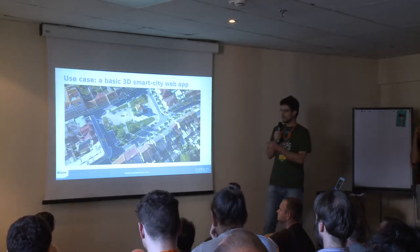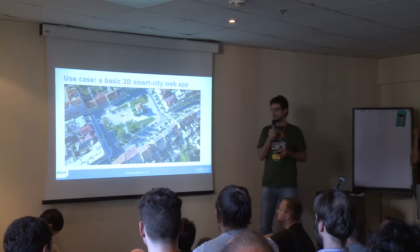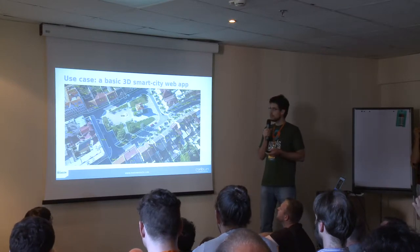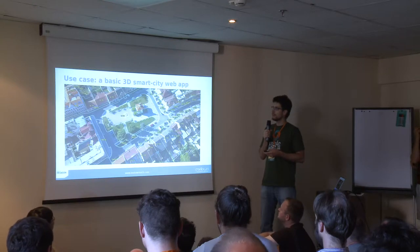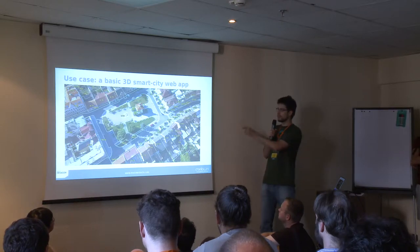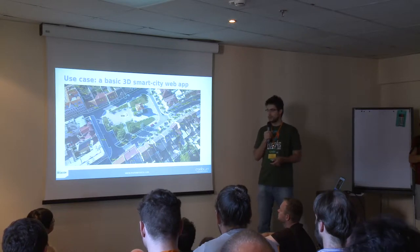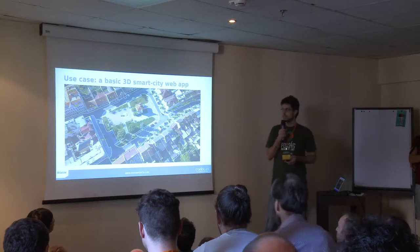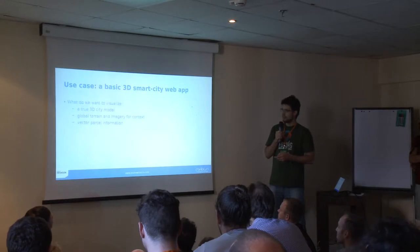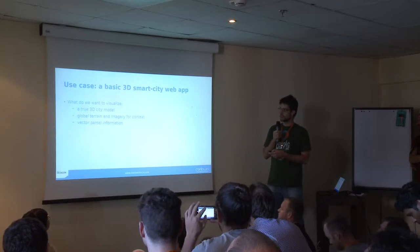As an example, we picked a basic 3D smart city web application. It's basically a global DEM with a 3D city model in 3D tiles format, overlaid with a vector layer of parcels with parcel numbers. We want to display the parcels — those are the blue lines — display the numbers, display the 3D model, and browse it to see how the stacks perform. So: a true 3D city model, global terrain imagery for context, and vector parcel information.